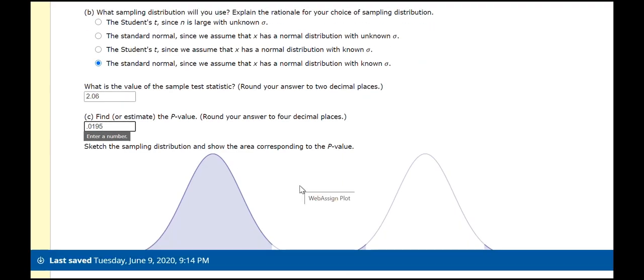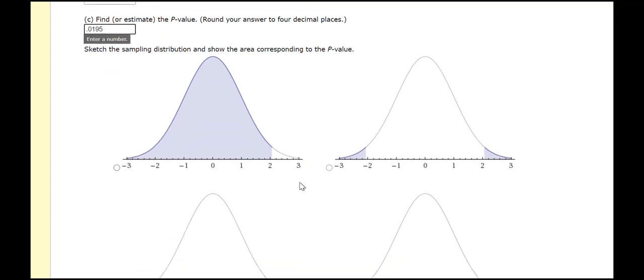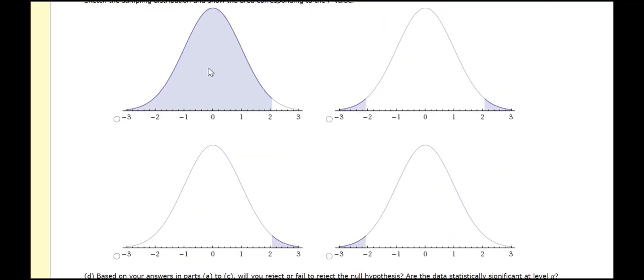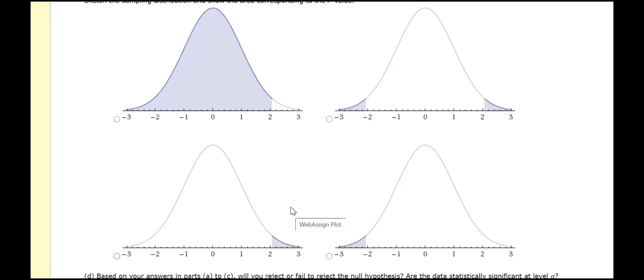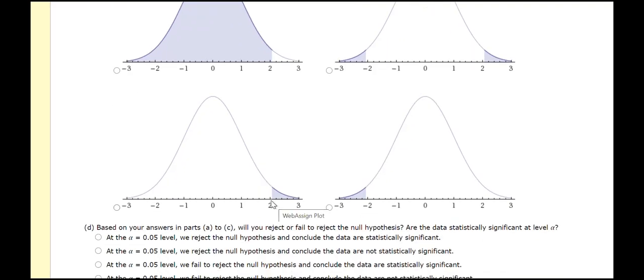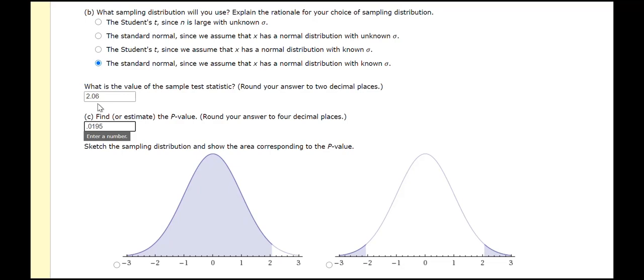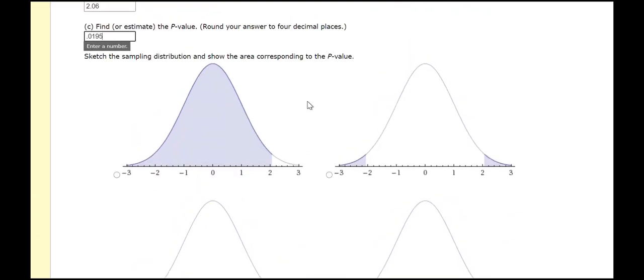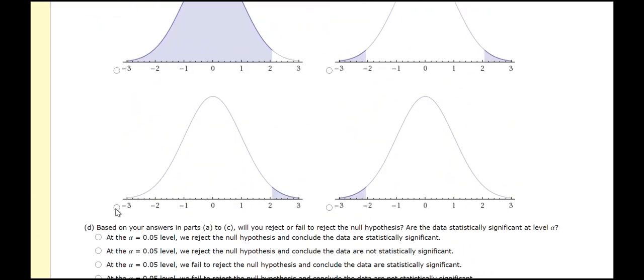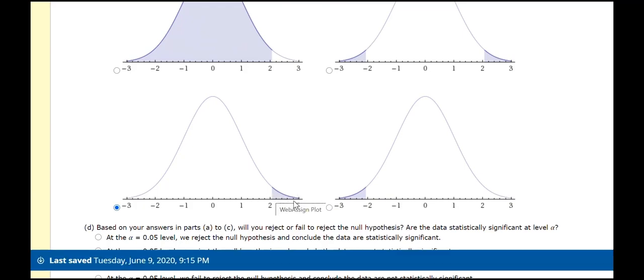So, then we're supposed to sketch the distribution and show the area corresponding to the p-value. So, it's definitely not this one. That would be a two-sided test. And, so it's one of these three. And, so this, again, is this right-tailed. So, the shaded area has to be on the right. So, this is the shaded area right-tailed. And, then 2.06 corresponds to where the standard deviation starts here, away from the mean. So, 2.06 would be about right there. That looks right. And, again, I'm getting this 2.06 from the sample test statistic. So, this 2.06. So, this area underneath this curve from 2.06 off to infinity is equal to this 0.0195. So, this is the one I want. So, it's right-tailed and the area shaded is to the right.